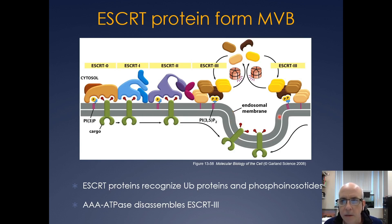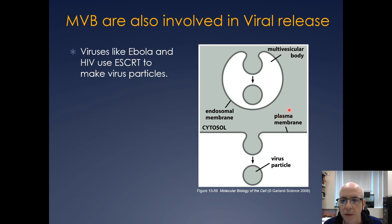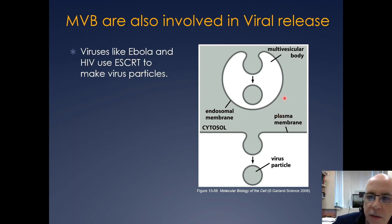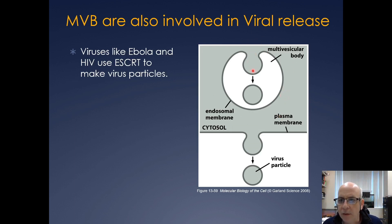It's not only these multivesicular bodies, but this process is actually important in viral release. In viral release, everything in the virus gets packaged into this vesicle, and then when this multivesicular body actually fuses with the plasma membrane, the virus particle can be released.